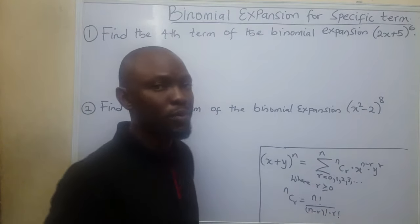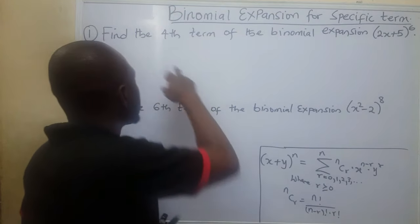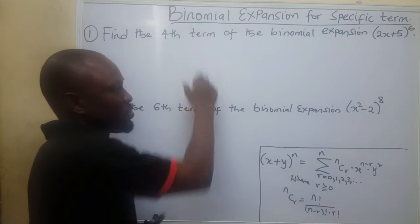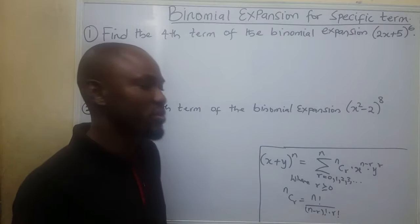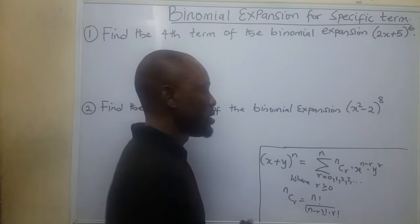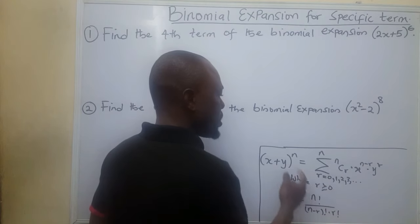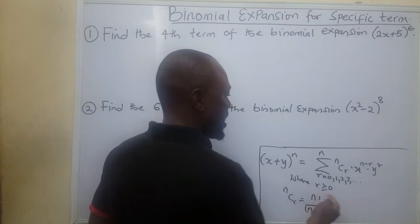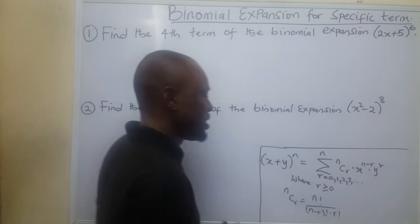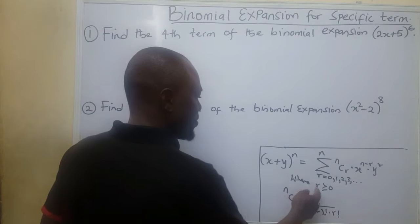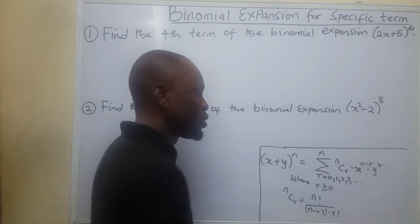Now, what does r represent? r represents the term number. When the term number is 1, my r will be 0. When the term number is 2, my r will be 1. When the term number is 3, my r will be 2. When the term number is 4, my r will be 3. That is how it goes. R has to be greater than or equal to 0, which simply means the least value of r will be 0.